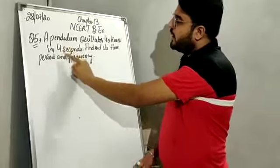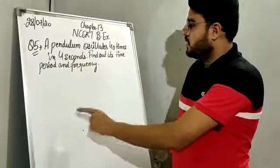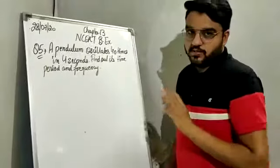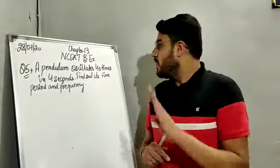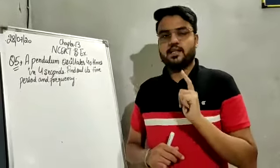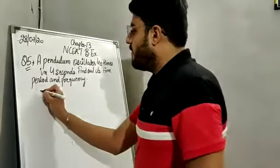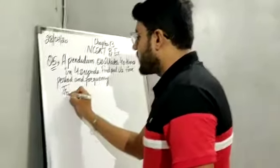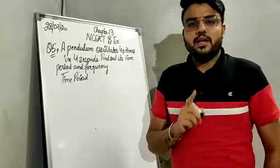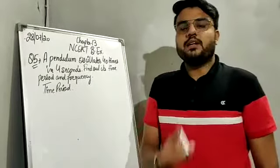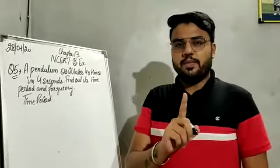Question 5: A pendulum oscillates 40 times in 4 seconds. Find out its time period and frequency. So first of all we will calculate the time period. As we know, time period is the time taken to complete one oscillation.